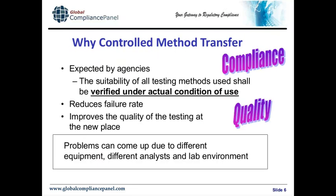This slide gives reasons why we should pay attention to controlled method transfers. There are two reasons. Number one is to comply with regulations, and equally important is to reduce failure rates and improve the quality of analytical test results — to reduce or eliminate out-of-specification test results based on inappropriately transferred methods. The main reason why transferred methods cause problems is that the receiving laboratory may have different equipment, analysts with different skills, a different environment, or different measurement practices. This is why we need to test all these things. Training is also very important — the analysts in the receiving lab should be equally well trained as those in the transferring laboratory.